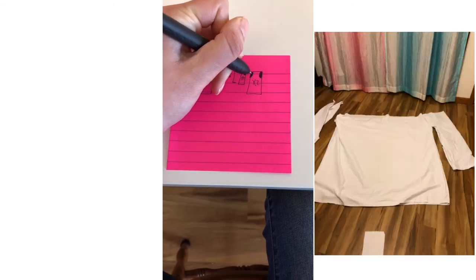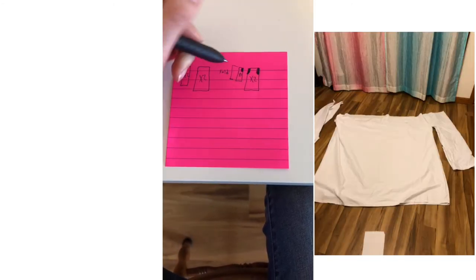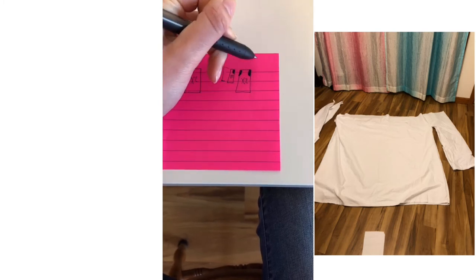And then what you're gonna do is you're just gonna sew these two U's together so you'll put your two right sides of the fabric together and sew a U here and you'll sew a U here.